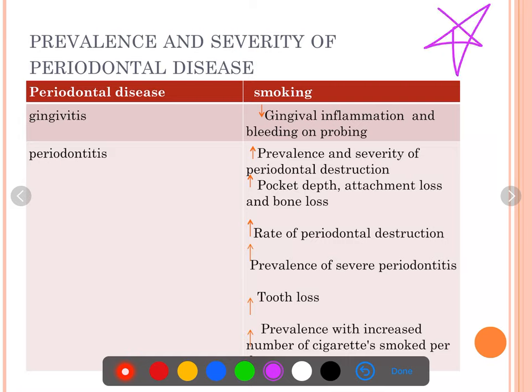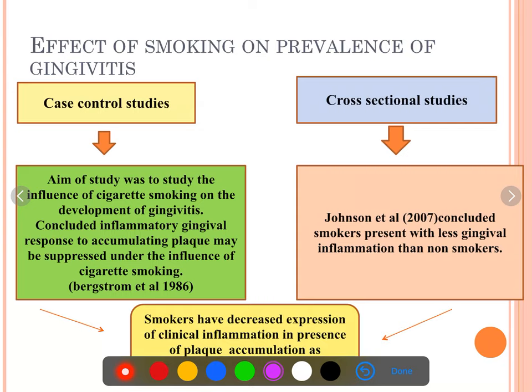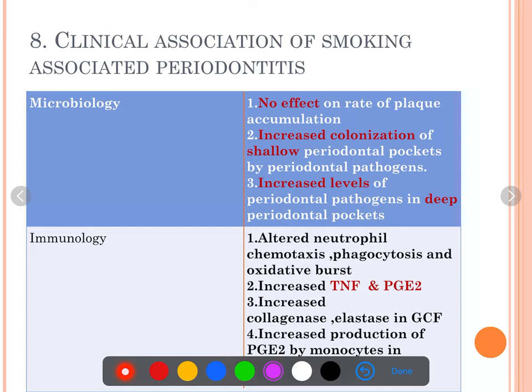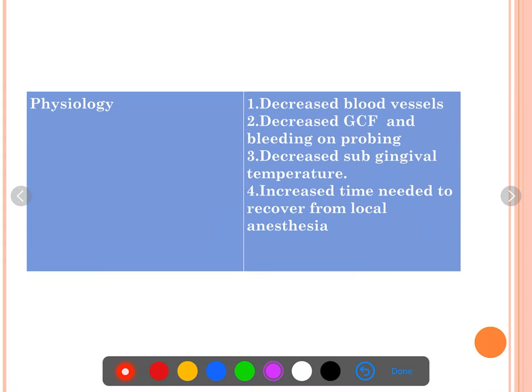Prevalence and severity of periodontal diseases is elaborated in a table given in Carranza as well. Effects of smoking on prevalence cover case-control studies and cross-sectional studies and their conclusions. Effects of smoking on prevalence of periodontitis include the NHANES survey, then clinical association of smoking-associated periodontitis.